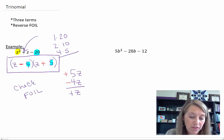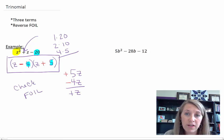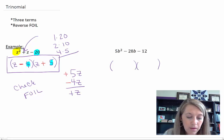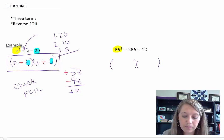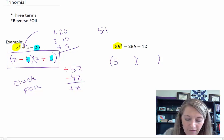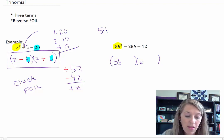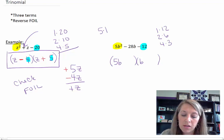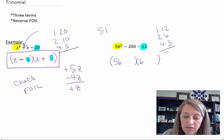That one was a little easier because my first term z² didn't have any coefficients. Now let's move to the second example — it's going to be a little more complicated. Again, three terms with no common factors, so I set up my sets of parentheses. What times what gives me 5b²? Well, 5 is prime so the only choices are 5 and 1 — that makes it a little easier: I have 5b and 1b. Then my last: what times what gives me 12? I have 1 × 12, 2 × 6, and 4 × 3.